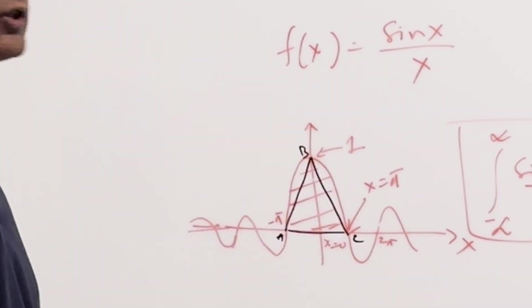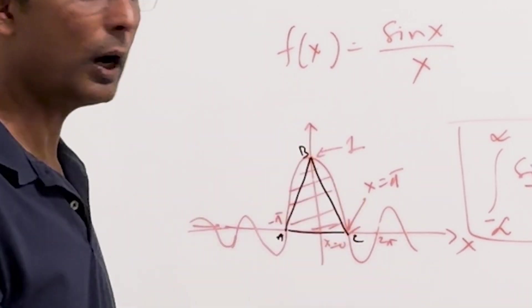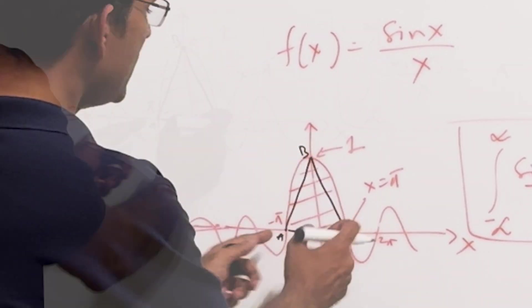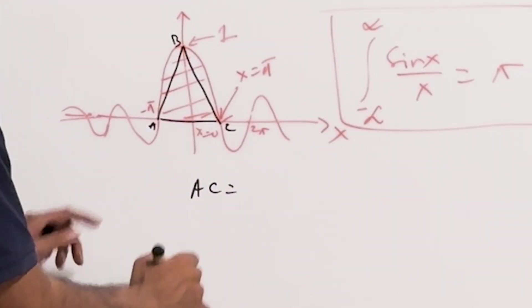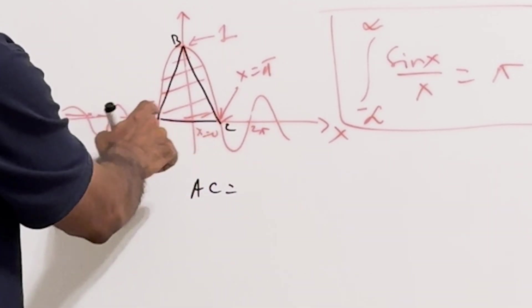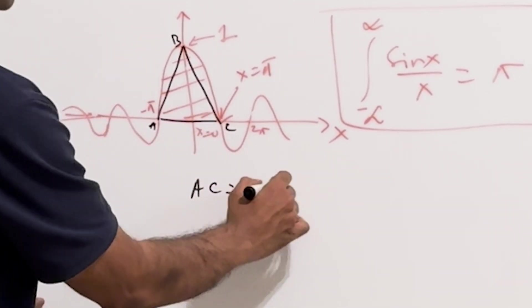What is the area of this triangle? Its height is 1, right, this is 1, and what is AC? So AC goes from minus pi to plus pi, so AC is 2 pi, right?